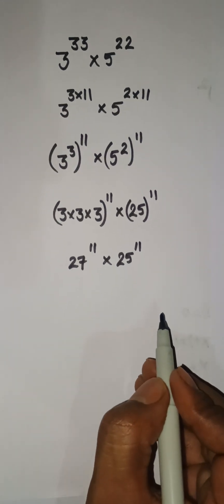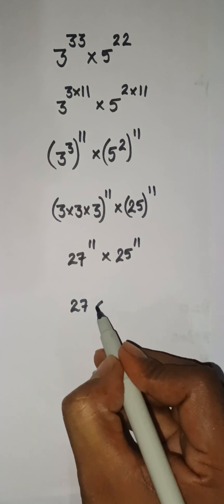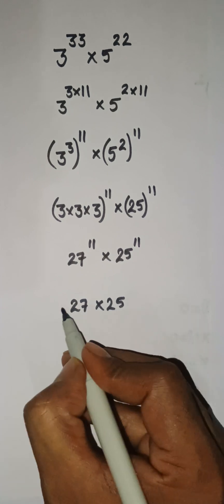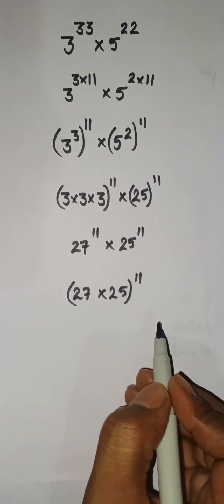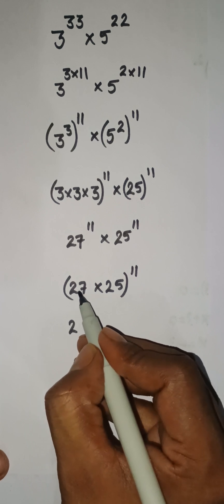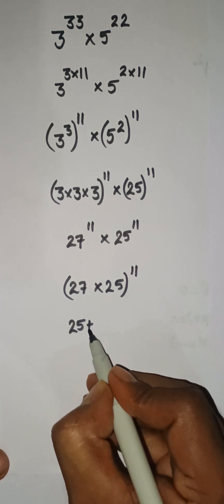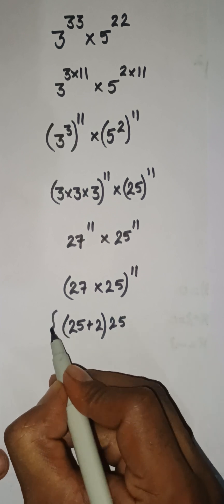Now we can multiply these together: 27 and 25. So here, 27 times 25, and then the power is common here, so 11. Now 27 into 25—this can be written as 25 plus 2, and then 25, and there is a power over here, that is 11.